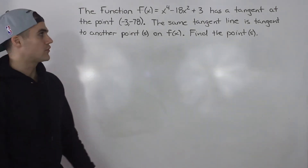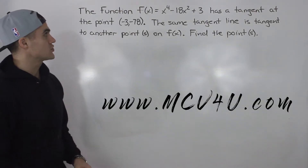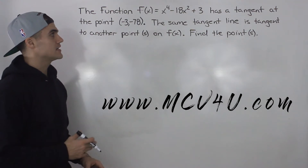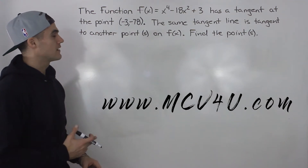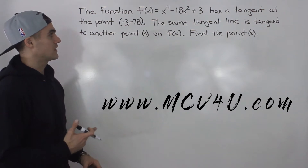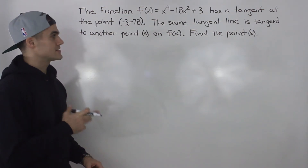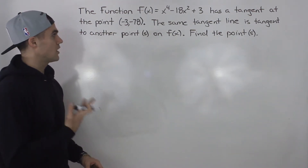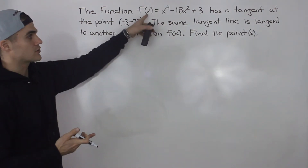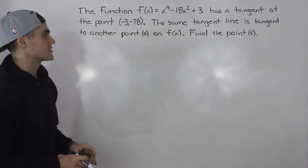Welcome back. Moving on to another question. The function f(x) = x⁴ - 18x² + 3 has a tangent at the point (-3, -78). The same tangent line is tangent to another point or set of points on that same function f(x), and we have to find those points.